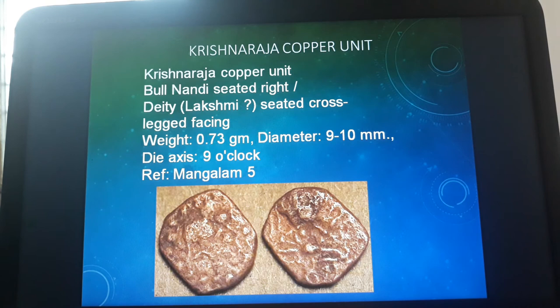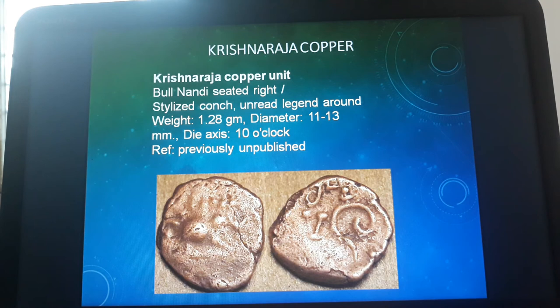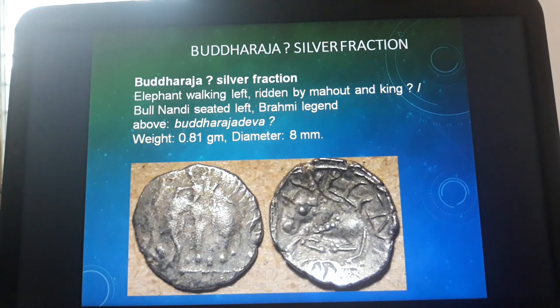This is also a Krishna Raja copper unit, but of a different type — it is square-shaped. On the obverse, the bull Nandi is again shown seated right. On the reverse, there appears to be a Lakshmi figure seated cross-legged facing front, though this is not deciphered very clearly, so a question mark is noted. Another variant of this Krishna Raja copper unit shows the bull Nandi seated right in a very stylized form, with an unread legend.